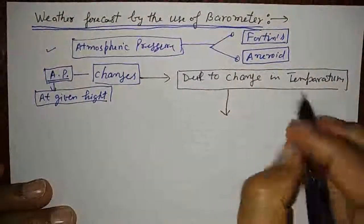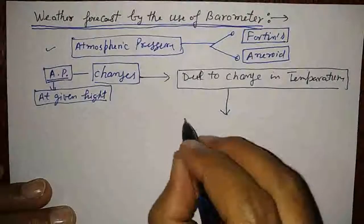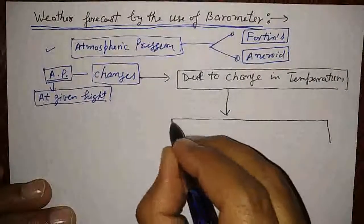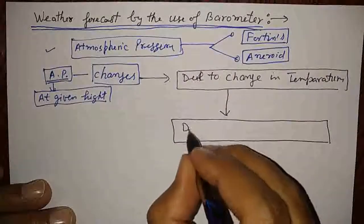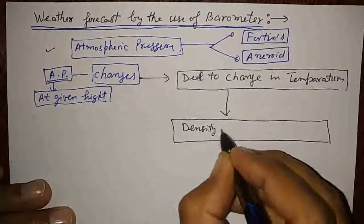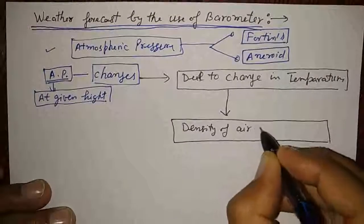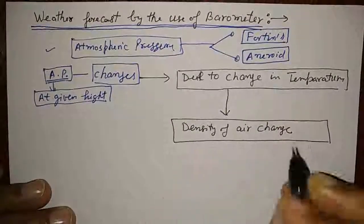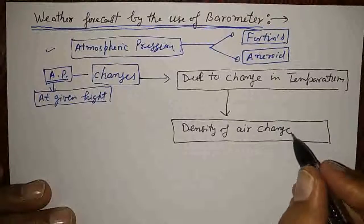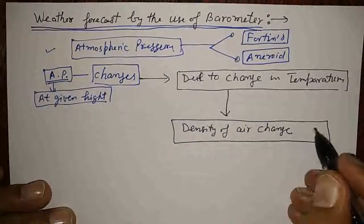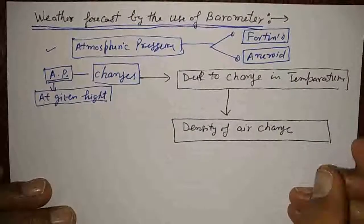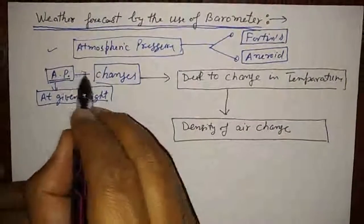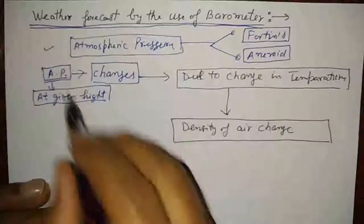If temperature changes, the density of air changes. Due to change in the density of air, the weight of the air column also changes. As a result, the atmospheric pressure changes.